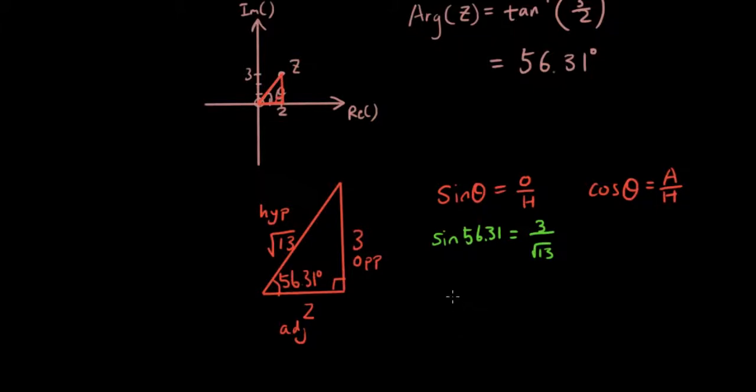Now if I rewrite this, if I rearrange this to make 3 the subject, then I have square root of 13 times sine 56.31 equals 3.